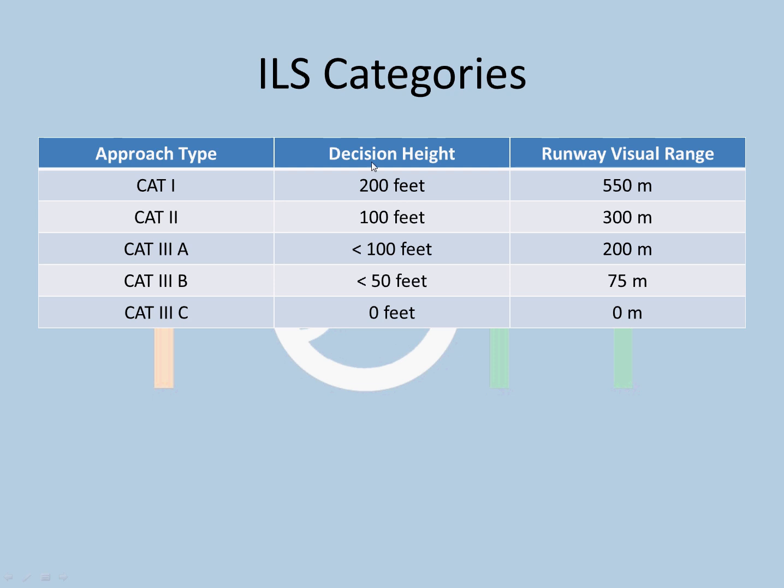Decision height, as I told you earlier, is the height where the pilot decides whether he wants to continue the landing or he wants to do a missed approach, or a go around. Cat 1, the decision height is 200 feet. Minimum requirement runway visual range, meaning the visibility on the runway should be minimum of 550 meters.